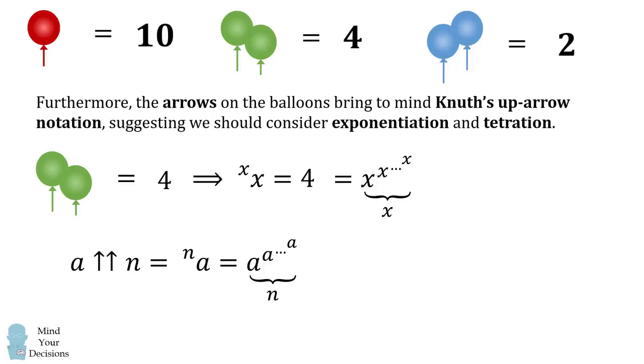So how do we solve this? Well, I don't know the general method for solving this kind of equation. But for this particular equation, we can make a lucky guess. Notice that 2 left superscript of 2 is equal to 2 to the power of 2, which equals 4. In other words, X equals 2 satisfies this equation. So we figured out that the value of a single green balloon is equal to 2.